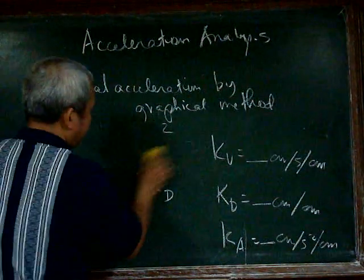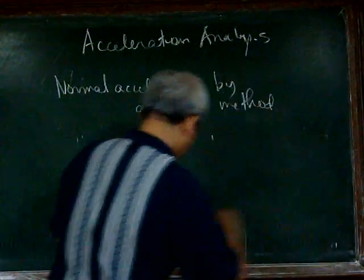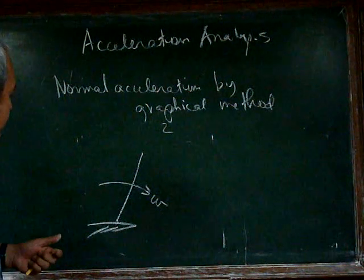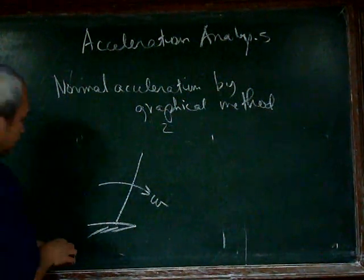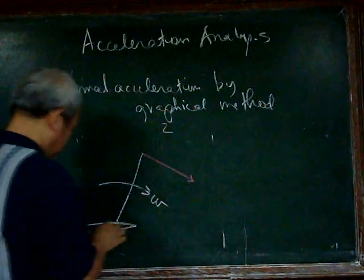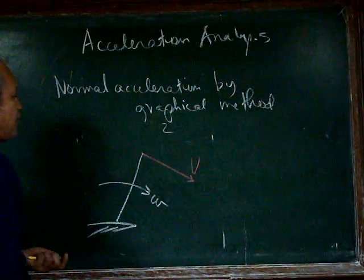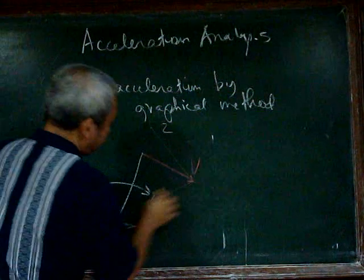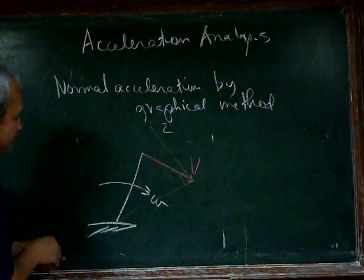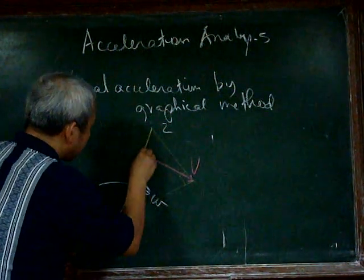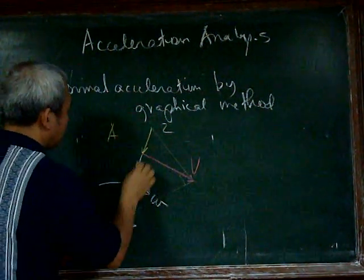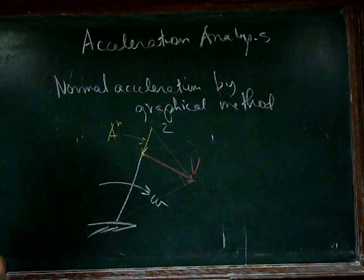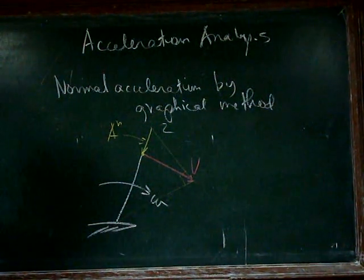Very briefly, we can look at this example. A certain body rotating with angular velocity omega has one point moving with a velocity v. The normal acceleration can be constructed by having these two lines perpendicular to each other. This particular length here is the acceleration of this point — the normal acceleration. It can be absolute or it can be relative acceleration.